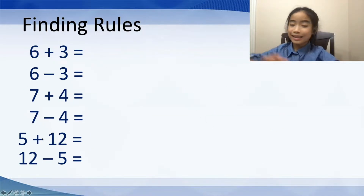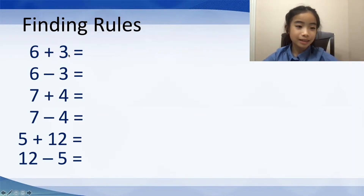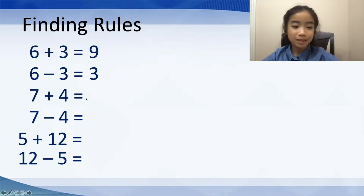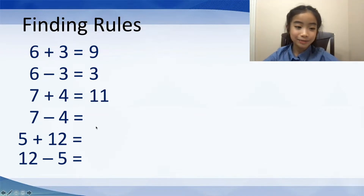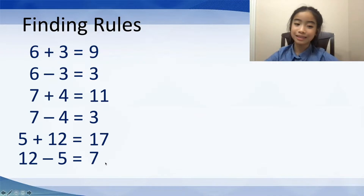Now let's look at the last set of operations. We have 6 plus 3 equals 9, and 6 minus 3 equals 3. Then 7 plus 4 equals 11, and 7 minus 4 equals 3. Then 5 plus 12 equals 17, and 12 minus 5 equals 7.